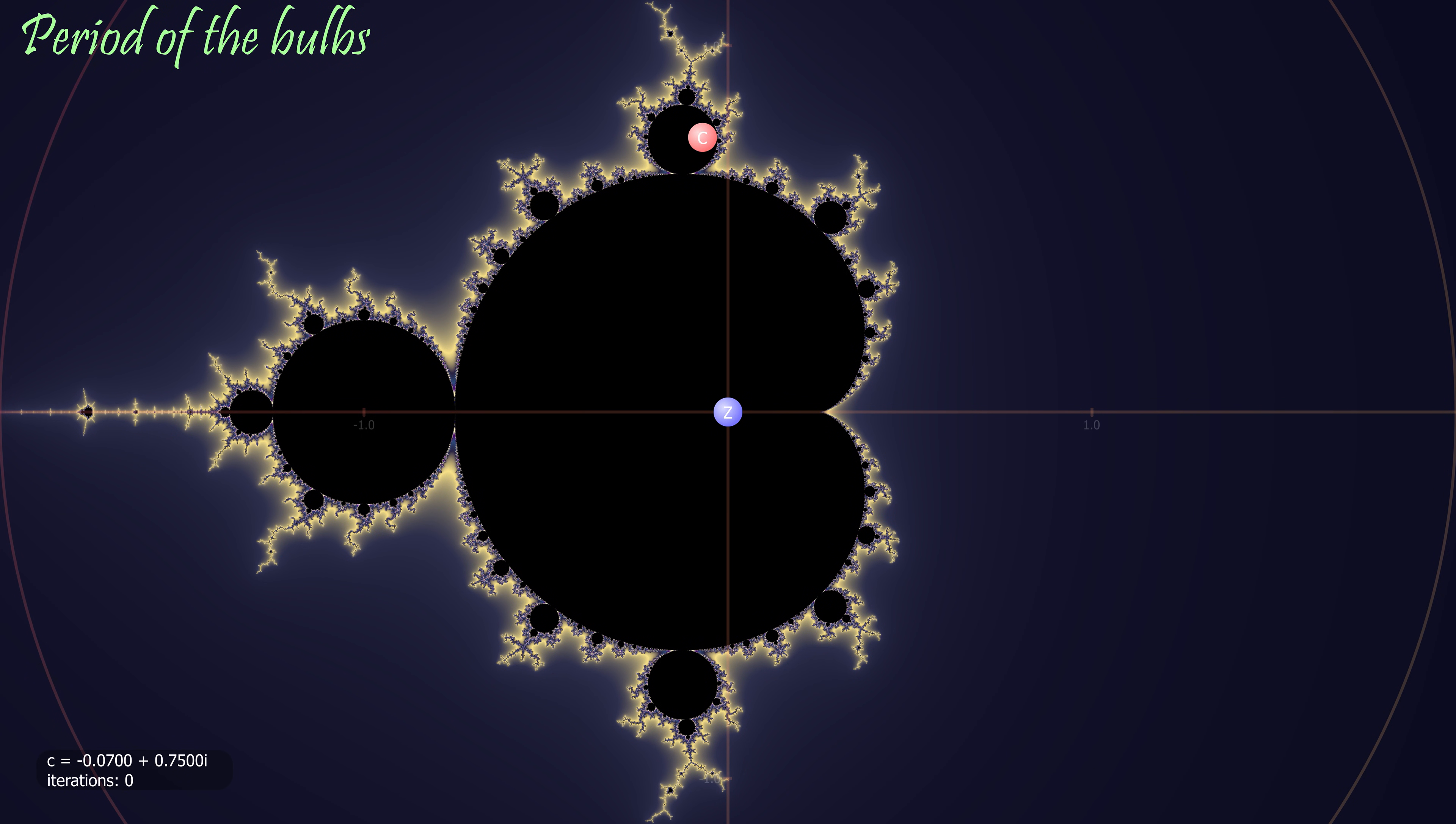Remember back to video one, when we showed that each bulb has an associated period? Well if not, here is a recap. If we let C equal any point in this bulb here, you will see that the orbit converges on a sequence of three points. It becomes periodic. And we say that the orbit has a period of three.